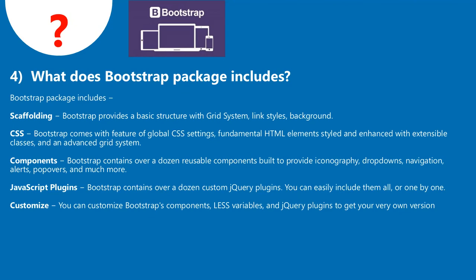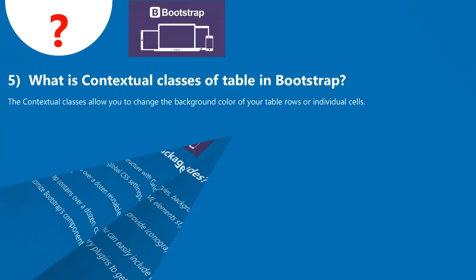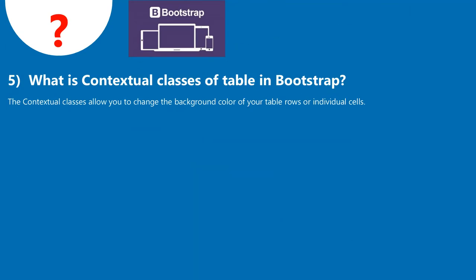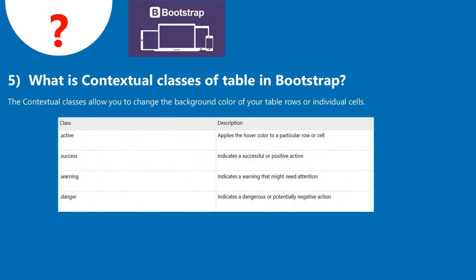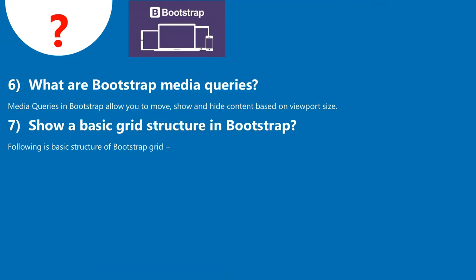Question 5: What are the contextual classes of table in Bootstrap? The contextual classes allow you to change the background color of your table rows or individual cells. Question 6: What are Bootstrap media queries? Media queries in Bootstrap allow you to move, show, and hide content based on viewport size.